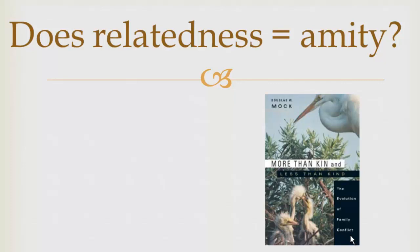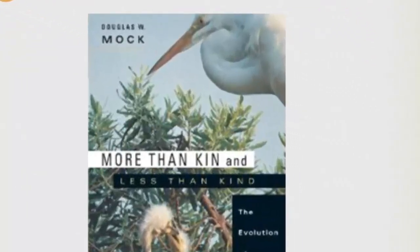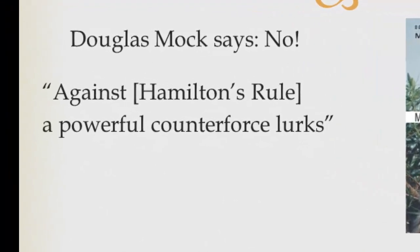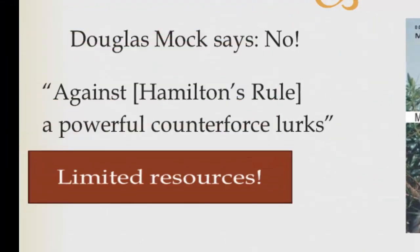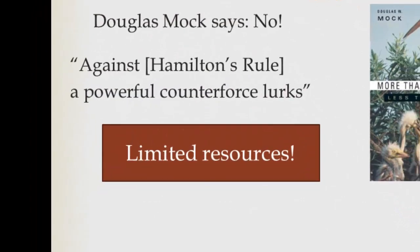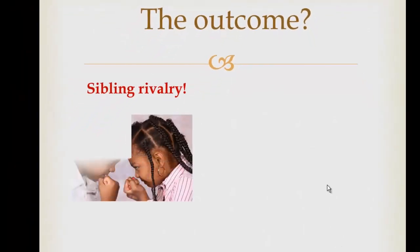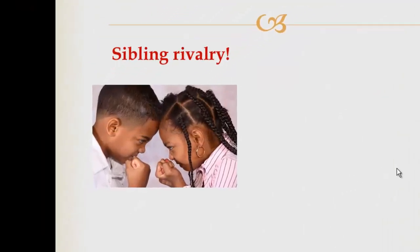A behavioral ecologist named Douglas Mock, who has specialized in nesting birds, adamantly argues no. His book is called More Than Kin and Less Than Kind: The Evolution of Family Conflict. Mock argues that against Hamilton's Rule, a powerful counterforce lurks: limited resources. The outcome of limited resources is what we call sibling rivalry, which is quite pronounced in humans, and there's probably an evolutionary history to this.